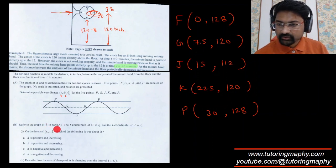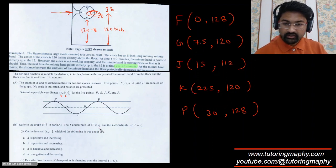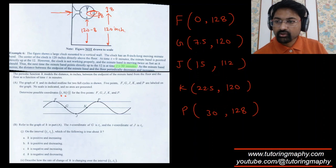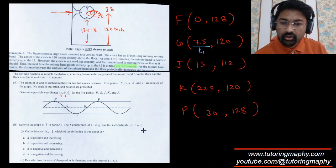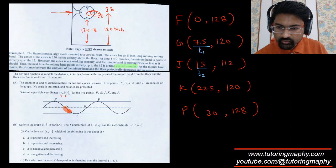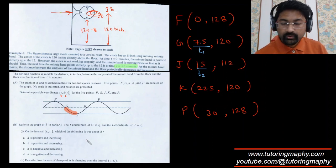Part B: Refer to the graph of h in part A. The t coordinate of G is t1, and the t coordinate of J is t2. On the interval from t1 to t2, which of the following is true? So this is the portion from G to J that they are talking about.